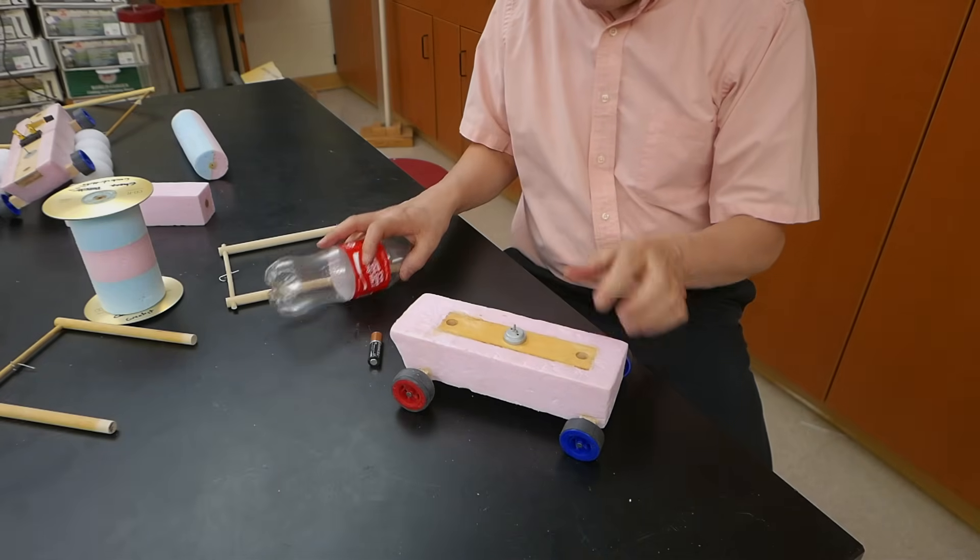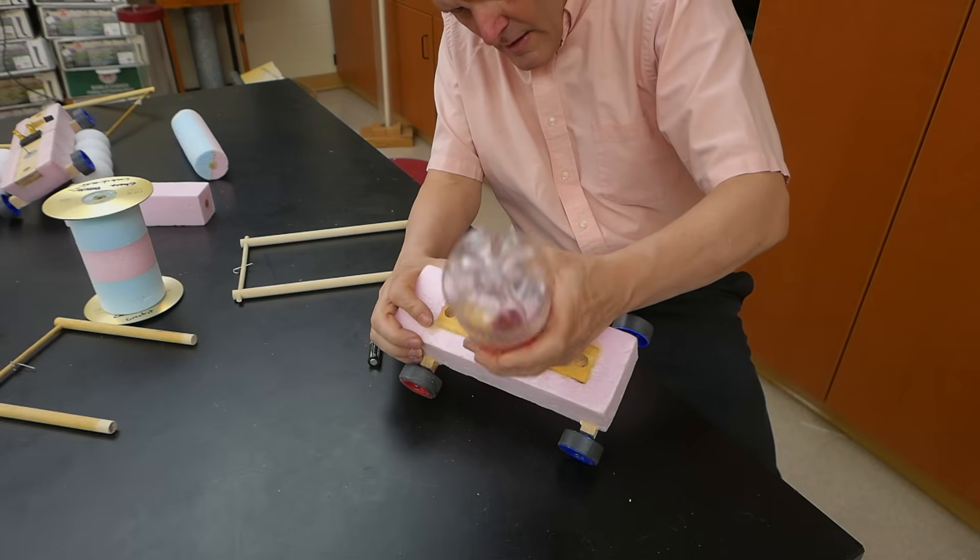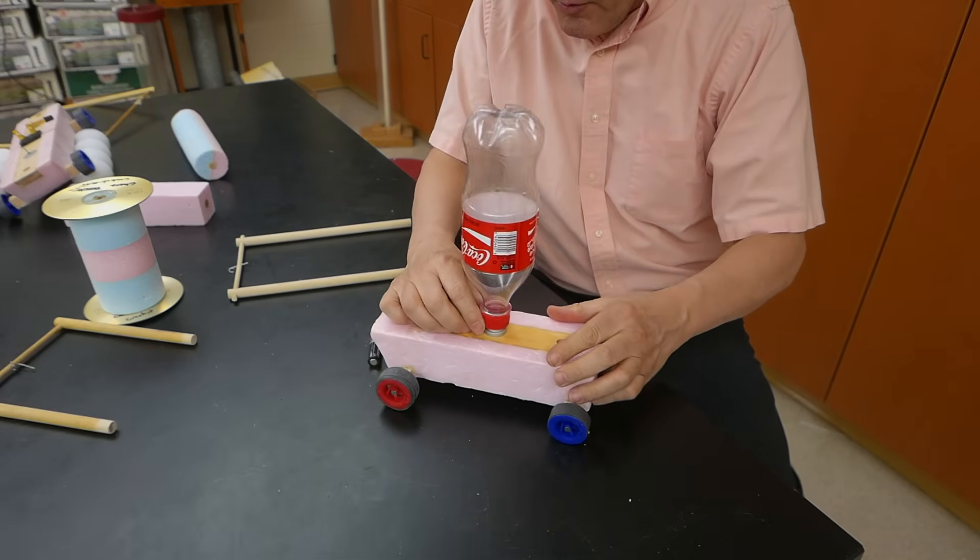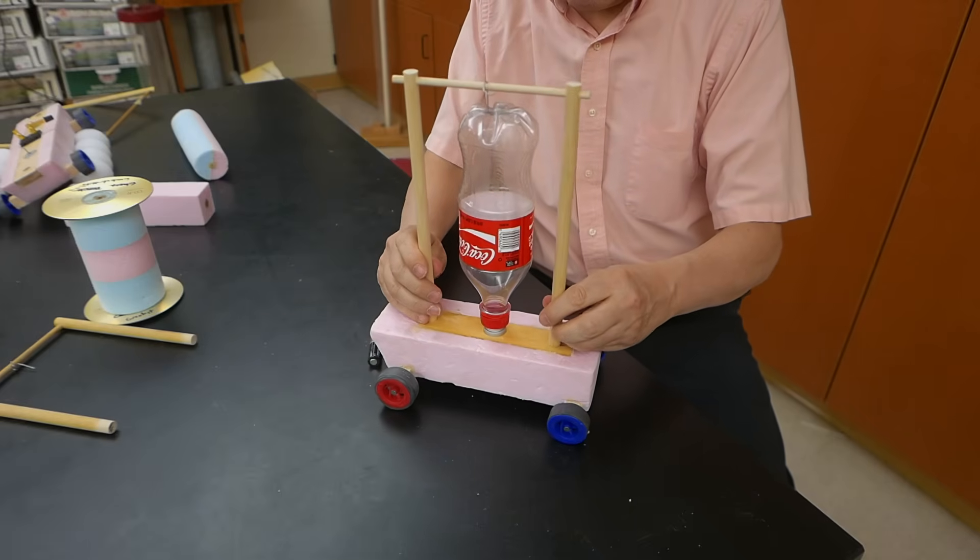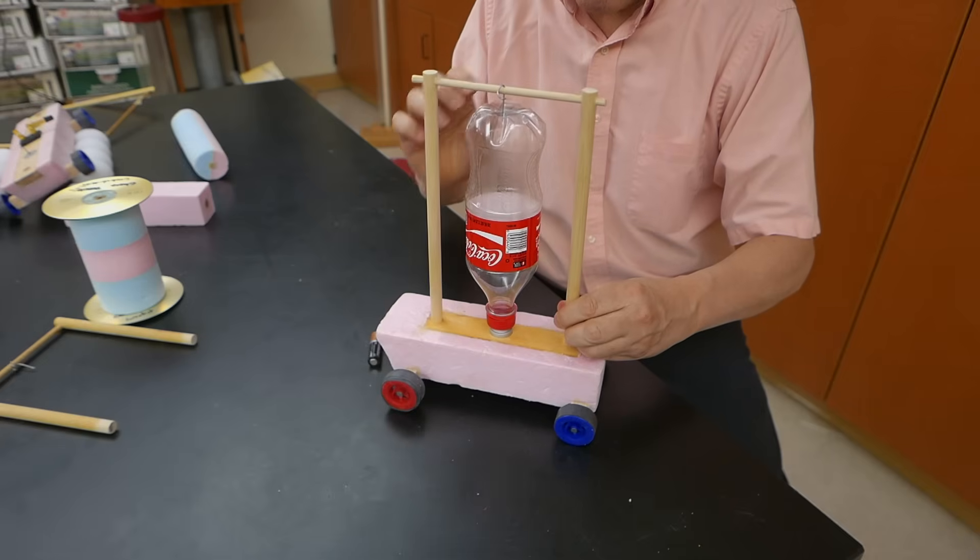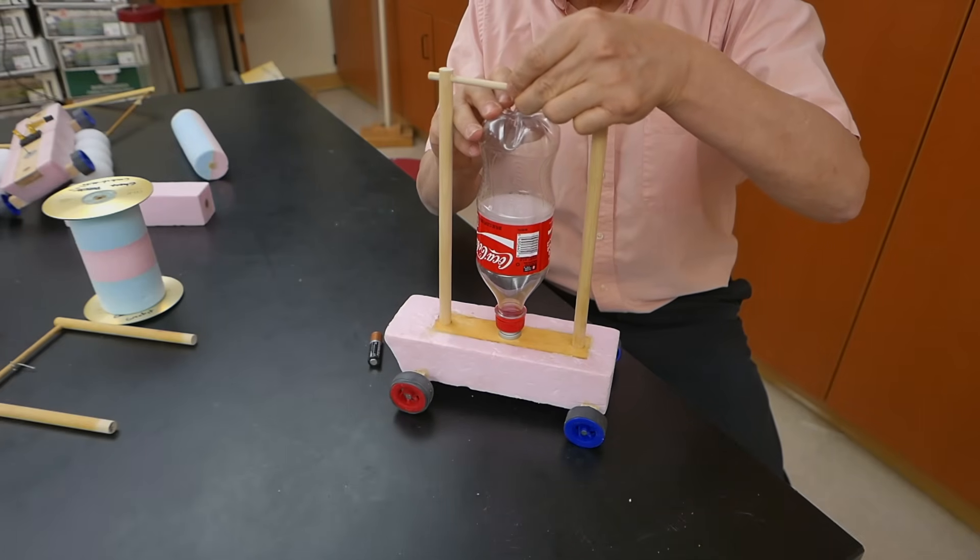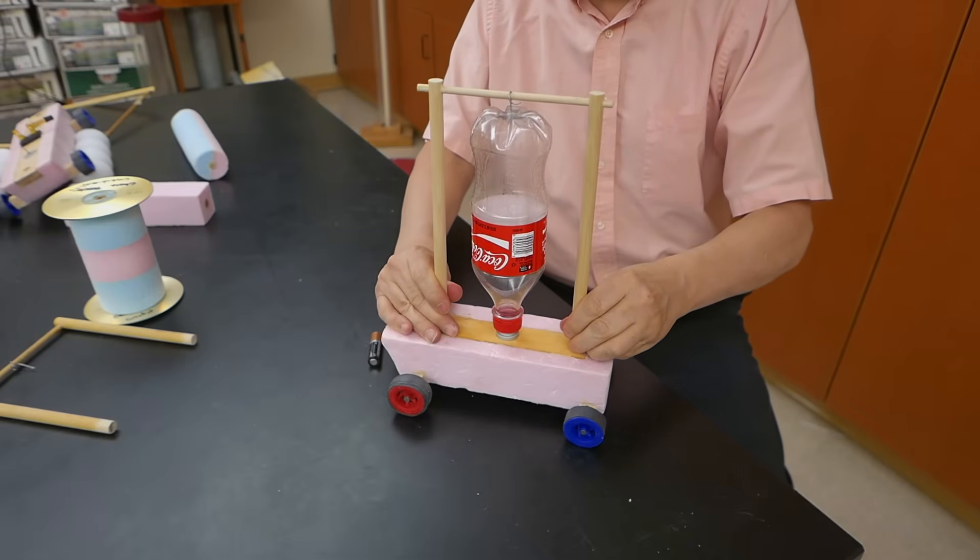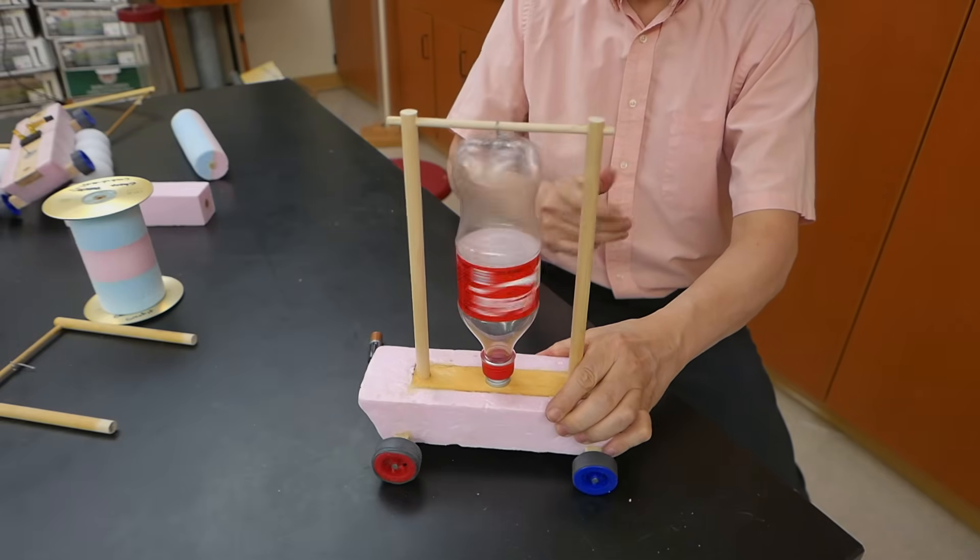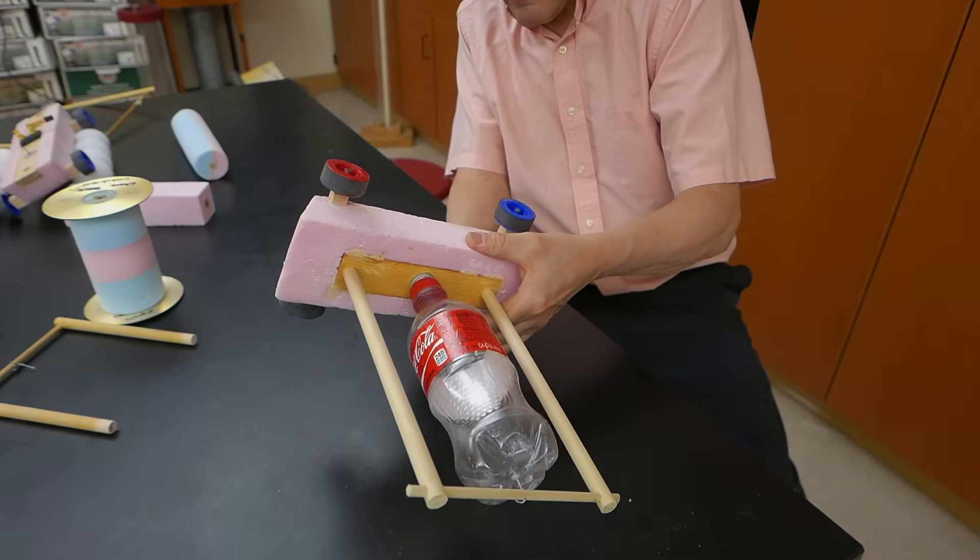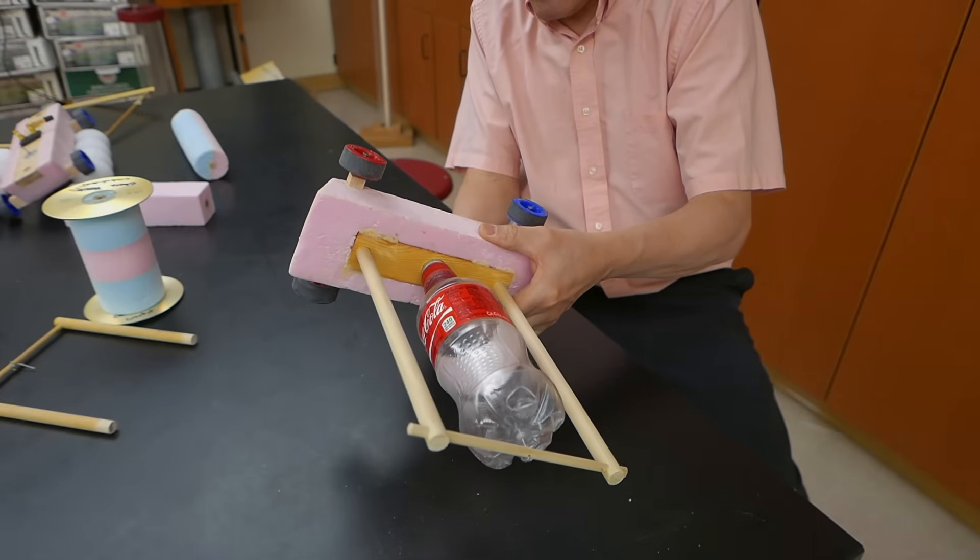Now, something else we can try is this soda bottle. Put that on the motor and let's add the supports here. There we go. Turn it on and see how it works.